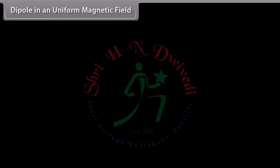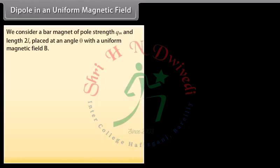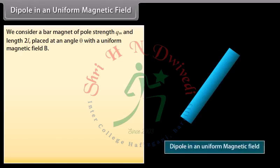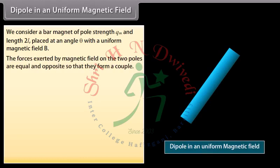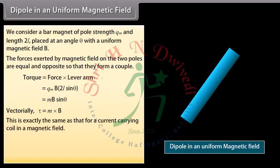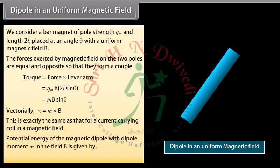Dipole in a uniform magnetic field: We consider a bar magnet of pole strength QM and length 2L placed at an angle theta with a uniform magnetic field B. The forces exerted by the magnetic field on the two poles are equal and opposite, so they form a couple. Torque equals force into lever arm, giving torque = MB sin θ. Vectorially, it is represented as τ = M × B. The potential energy of the magnetic dipole with dipole moment M in field B is given by the negative dot product of M and B.